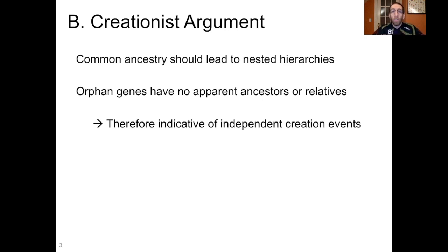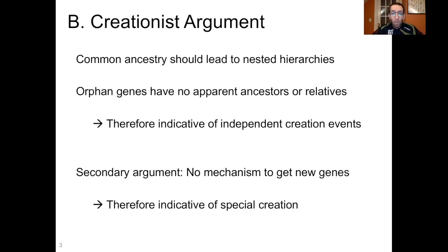The creationist argument around orphan genes is that, according to evolutionists, common ancestry should strictly lead to nested hierarchies. And because orphan genes have no apparent ancestors or relatives — that's why they're called orphans — that is indicative of special creation rather than common ancestry. In fact, you'll hear some creationists argue that the presence of orphan genes specifically refutes common ancestry. A secondary claim is that there's no mechanism to get new genes, so if you have genes in specific lineages, that's indicative that that lineage was specially created with that particular gene, because we can't make new genes out of nothing. That's what creationists will often claim.